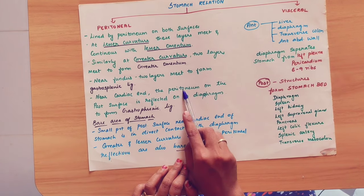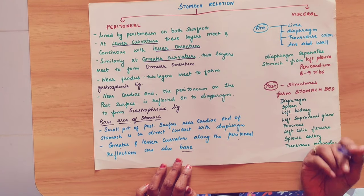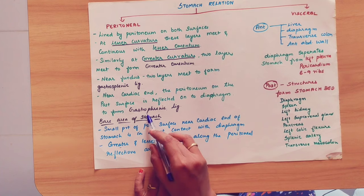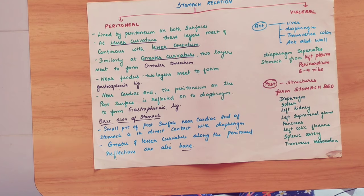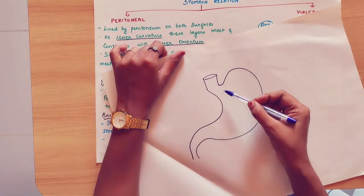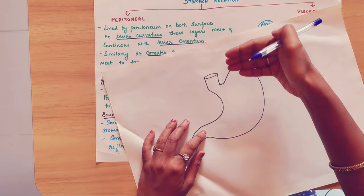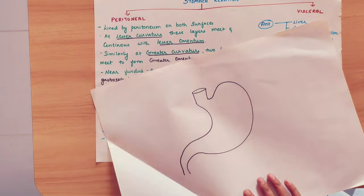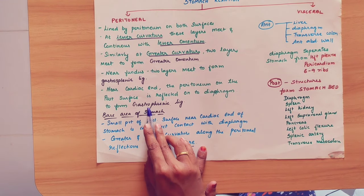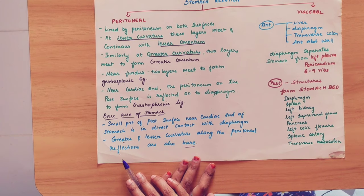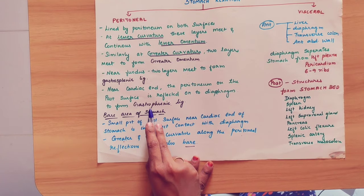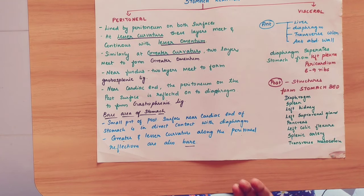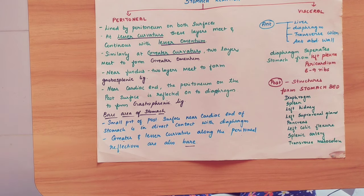Near the cardiac end, the peritoneum on the posterior surface is reflected on the diaphragm to form the gastro-phrenic ligament. Phrenic indicates the diaphragm. So at the cardiac end, in the posterior surface, the diaphragm has a double layer — that is called the gastro-phrenic ligament.